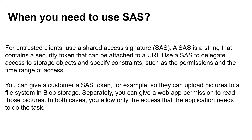A SAS is a string that contains a security token attached to a URI. Using Shared Access Signature you can decide whether to provide read access, write access, or even delete access. You can also specify the time range of access — you can provide access for one year or six months, it's up to you.